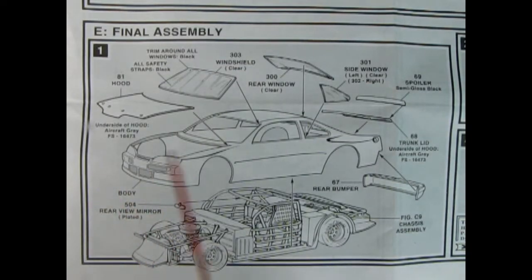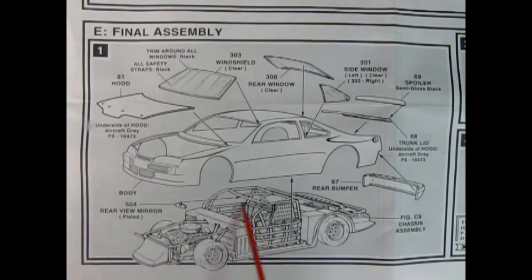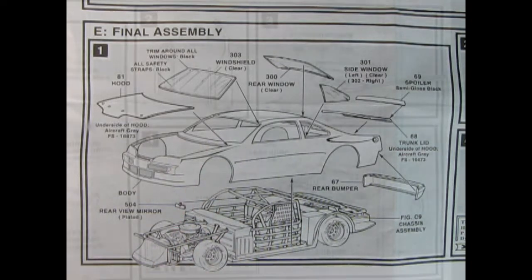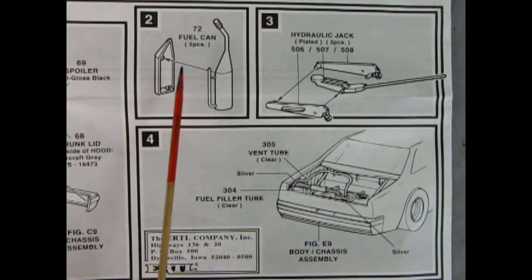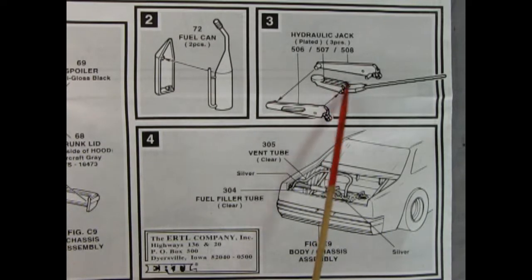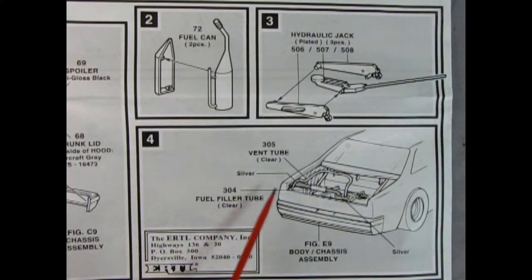Panel E shows our final assembly with our glass being glued in and then our hood. Now the glass looks like it comes from the outside in not from the back coming out. We have our spoiler here and our trunk lid as well as our rear bumper and the rear view mirror glues up onto our cage in here. And then all this would sandwich together. Panel two shows our fuel can being glued together and then panel three we get a hydraulic jack. Now these are some really cool accessories and then this is something you really need is the clear vent tube and the fuel filler tube which glues in from that fuel filler hole and goes into the top of the tank.